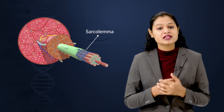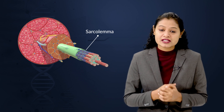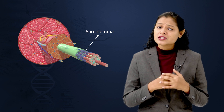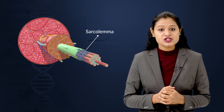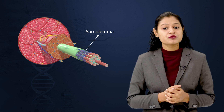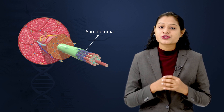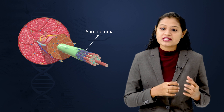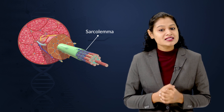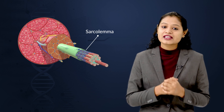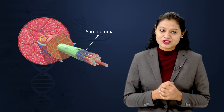The sarcomere is lined by a plasma membrane called the sarcolemma. This plasma membrane will invaginate near the Z disc to form the T tubules. These T tubules show presence of the cytoplasm, which is called the sarcoplasm, and this is the storage house of calcium ions responsible for muscle contraction.